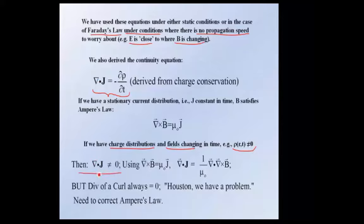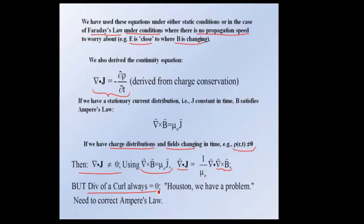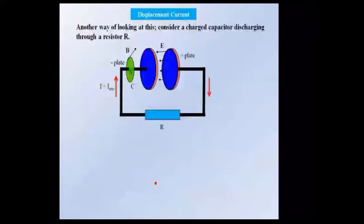If we have a rho that depends on t, then by the continuity equation, the divergence of J will be non-zero. Now look at Ampere's equation — we have J here. Let's take the divergence of J. Bring mu zero over and take the divergence of J, which equals one over mu zero times the divergence of the curl. However, the divergence of any curl is always equal to zero. So Houston, we have a problem — in one case we have a non-zero divergence, and here we have zero. We have to correct Ampere's law.